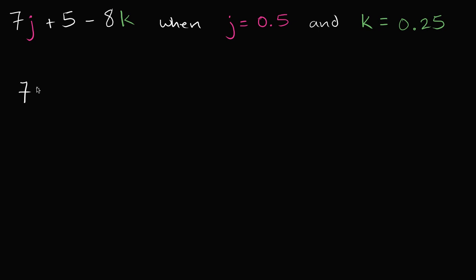This is going to be 7 times, and instead of j, I'm going to put a 0.5 in there, and then we have plus 5 minus 8 times k, and k we're saying is 0.25.